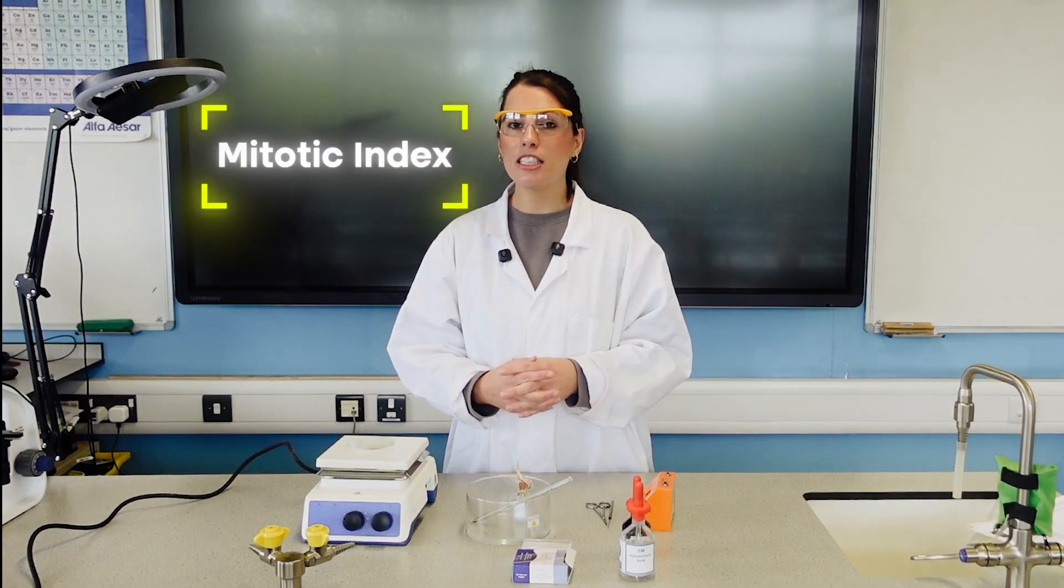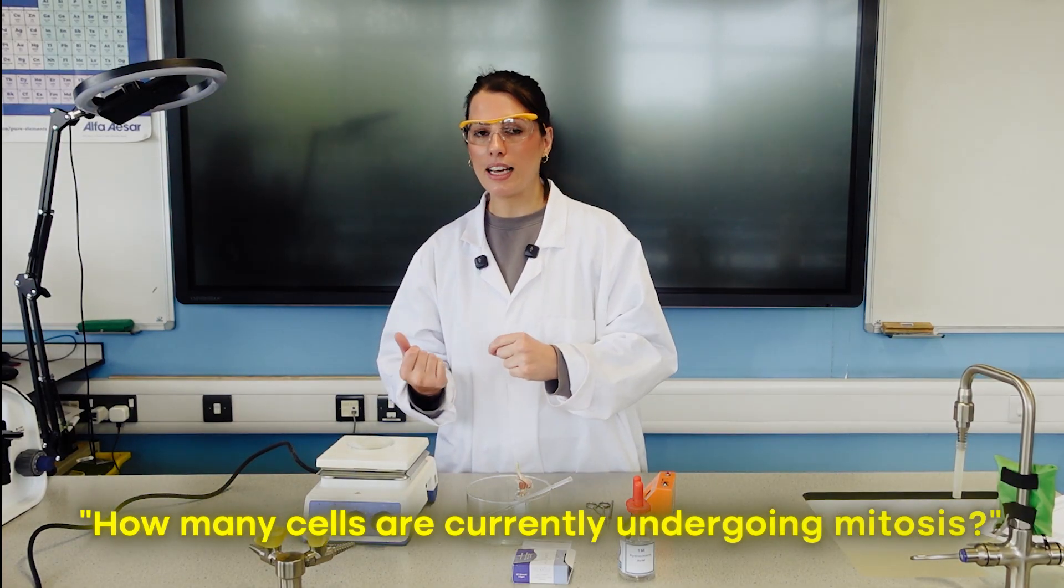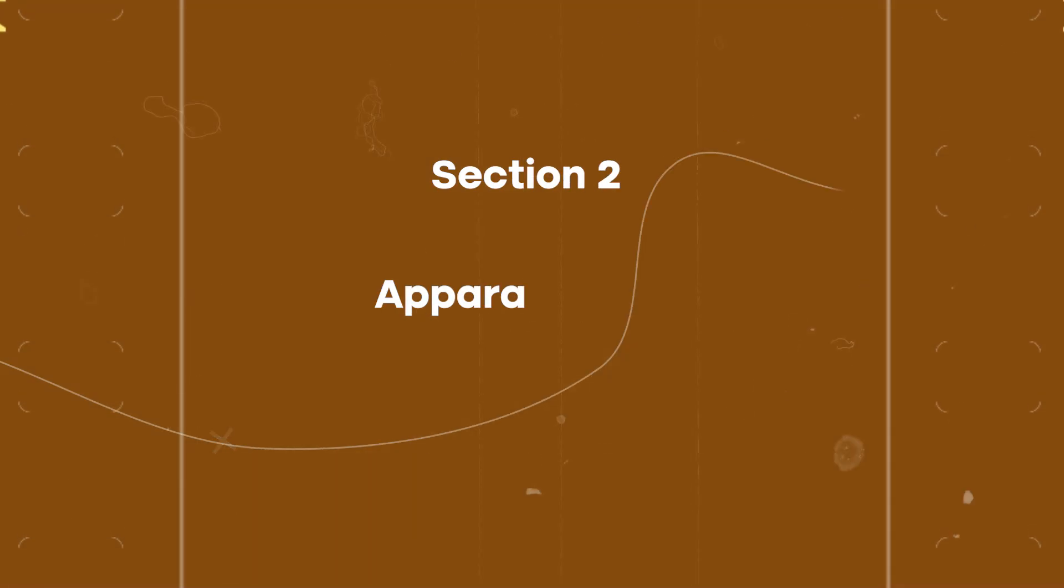Plus it links to that math skill, the mitotic index, where they need to identify how many cells there are in the field of view and how many cells are currently undergoing mitosis. Then they can work that out as a proportion. But before we jump into all of that, let's have a look at our equipment.